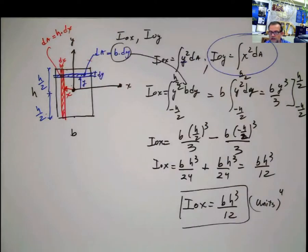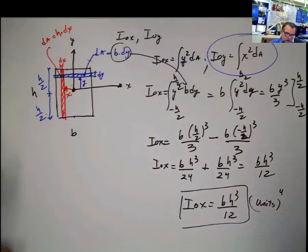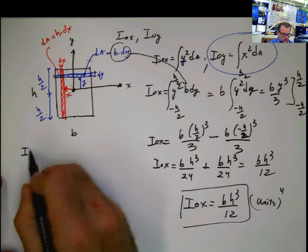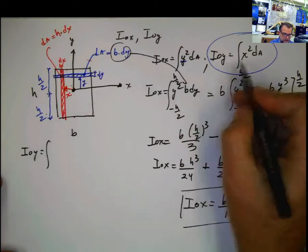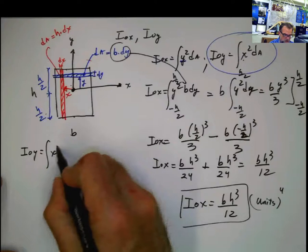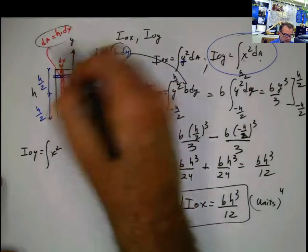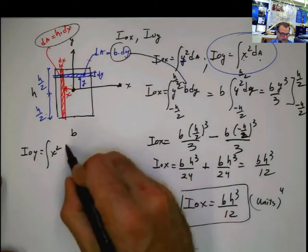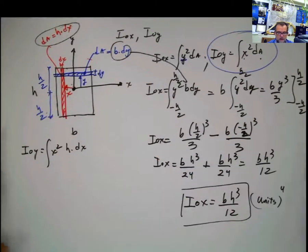Once you have that solved, solve the problem. I come here and I say, i sub 0y is the integral, I'm using this, of x squared multiplied by dA. But my new dA is this one, h times dx. Now, what are the limits of integration?